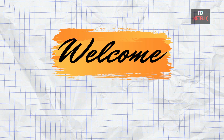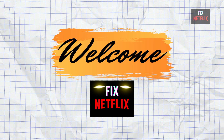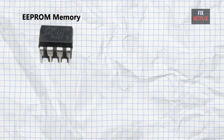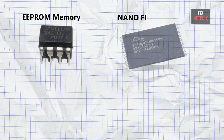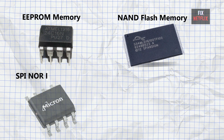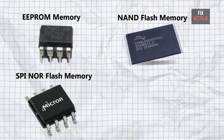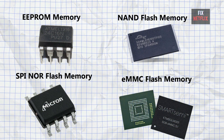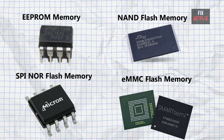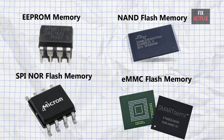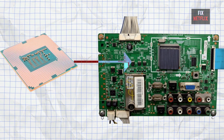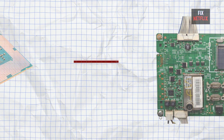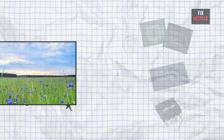Welcome back to the channel. Today we're diving into something important but often overlooked: the different types of memory ICs used inside TV mainboards, from old LCD models to the latest smart LED TVs. Each one has a unique memory setup, and these memory chips store important data that keeps your TV working properly. Let's break it all down in simple terms.